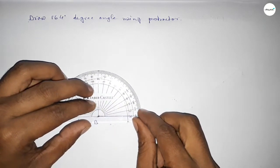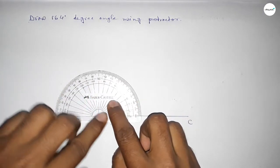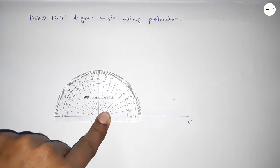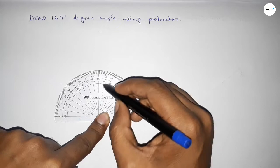Then counting the angles. So this is starting angle: 0, 10, 20, 30, 40, 50, 60, 70.